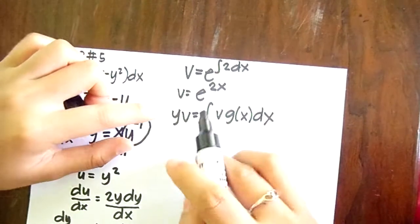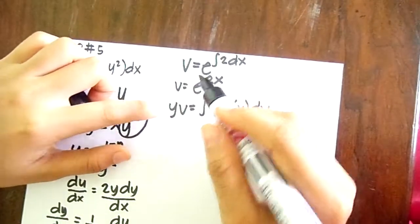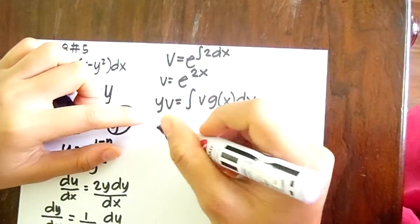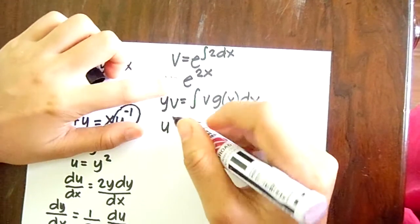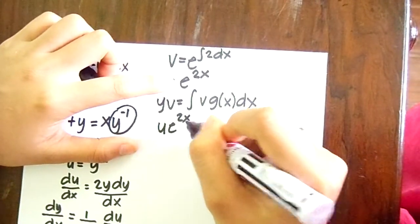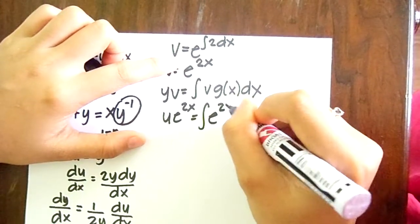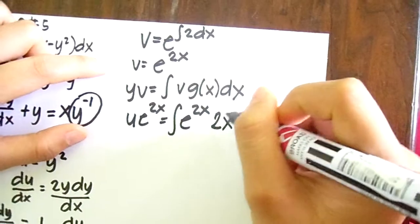Our general formula is yv equals integral of v g of x dx. So, since our y is just our u, so it becomes u times v, which is e to the 2x, equals the integral of our v, which is e to the 2x times our g of x, which is 2x, we write here 2x dx.